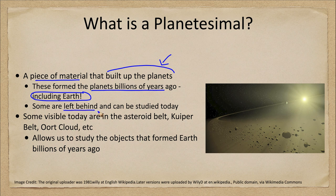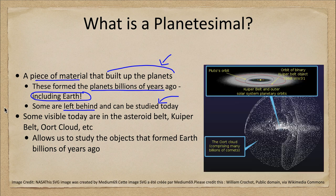However, these are still around — not all of these formed into planets, so some are left behind and can still be studied today. We see here some examples of these, and some of those are the objects in the asteroid belt, the Kuiper belt, and the Oort cloud. These are bits of material that were left over.